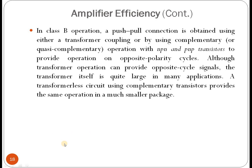For Class B push-pull operation, it is possible to use transformer coupling or complementary NPN and PNP transistors operating on opposite polarity cycles. Although a transformer can provide the opposite cycle signal, it is quite large. A transformerless circuit using complementary transistors provides the same operation in a much smaller device.